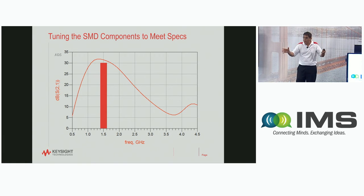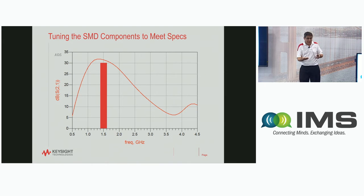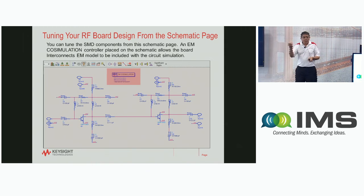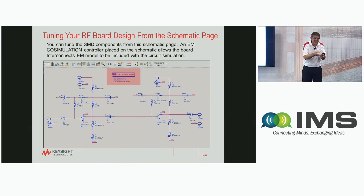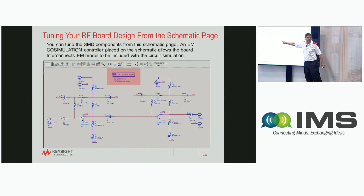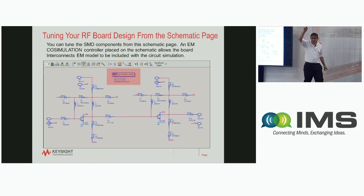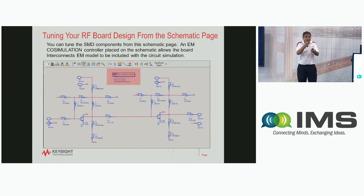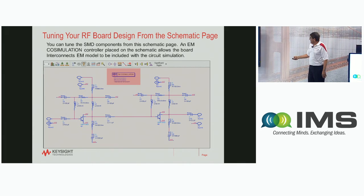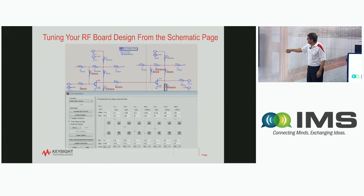Some of you might ask: you did it in the layout and the EM, but how about tuning on the schematic? I want to open the schematic and be able to tune it, because the schematic has the circuit models. To do this in ADS, you just place an EM co-simulation controller — you pull it from the simulation pull-down menu, place it, and all of a sudden when you tune it will incorporate the EM effect of the board. So this is the tuning on the schematic.